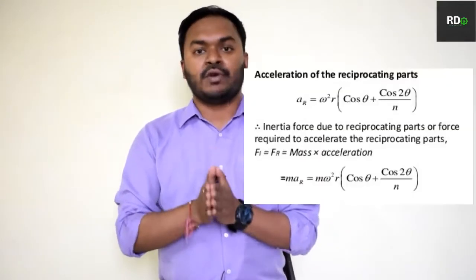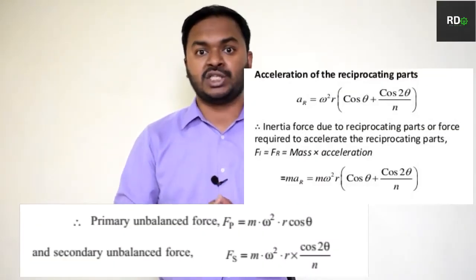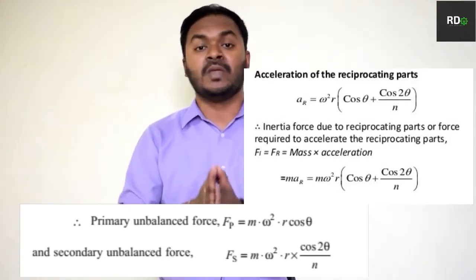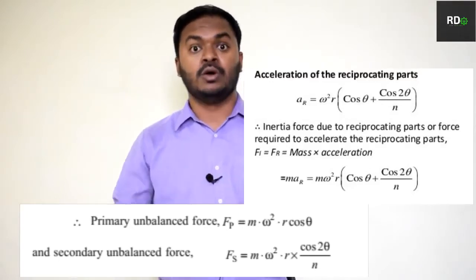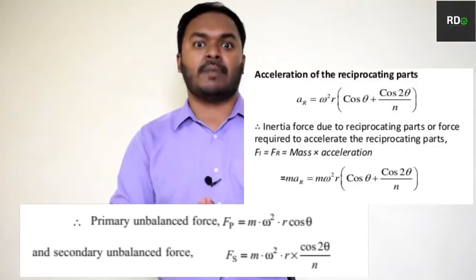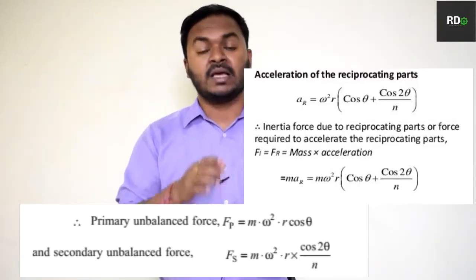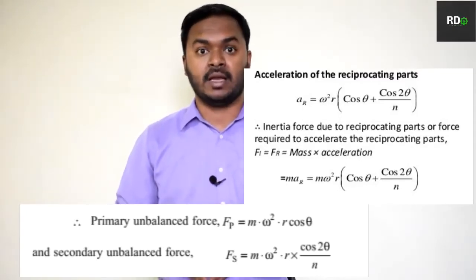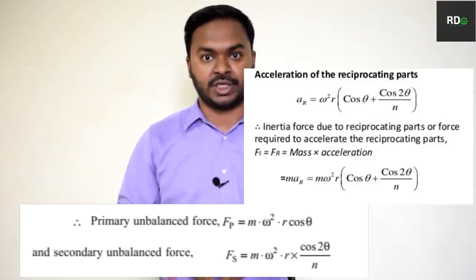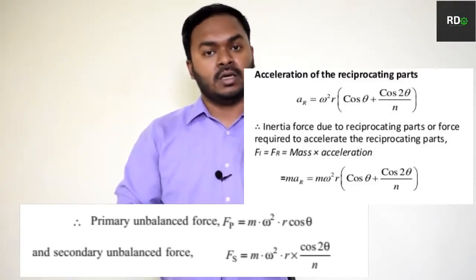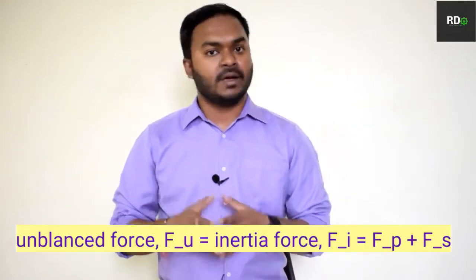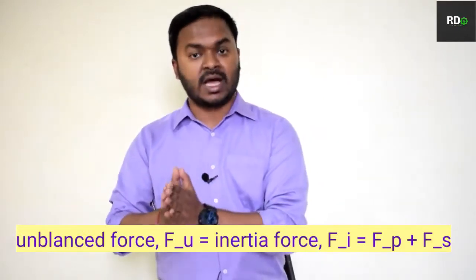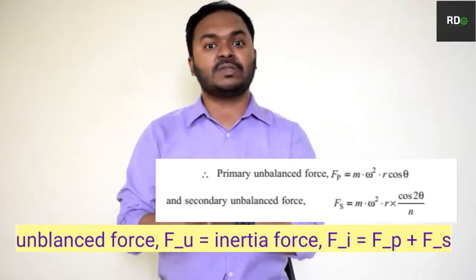If you can remember our inertia equation in case of reciprocating masses: Fi, the inertia force, is equal to mω²r into bracket (cosθ + cos2θ/n). If we break this bracket, it becomes mω²r·cosθ plus mω²r·cos2θ/n. This can be written as two separate expressions. Fi is actually the inertia force, which is the unbalanced force in reciprocating masses.